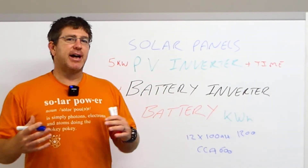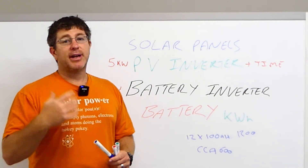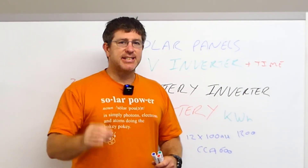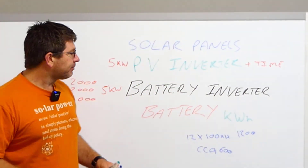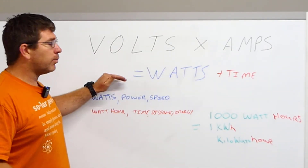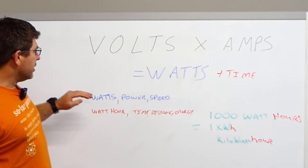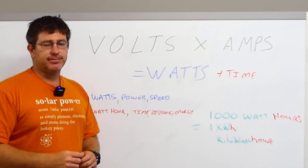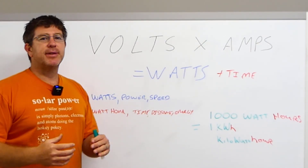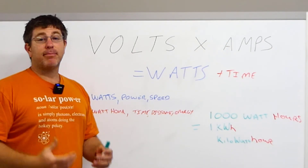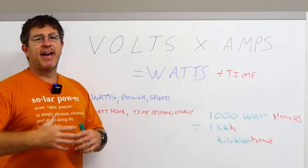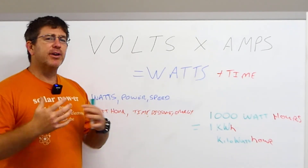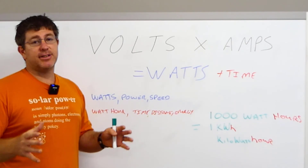When buying batteries or looking at lead acid types, always convert to kilowatt hours — it'll make your life much easier to understand how much energy you need in your battery storage. To recap: volts times amps gives us watts, add time and we get the watt hour. Watts is the power — the speed of how things happen. The watt hour is time, distance, or energy used over time. I'd highly recommend grabbing a couple of appliances from your house and doing this exercise yourself. Fridges and air conditioners are complicated and really good exercises to work out how much energy a device uses over time.